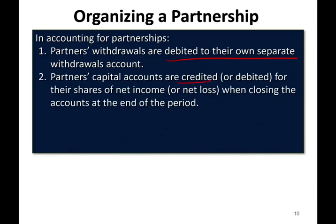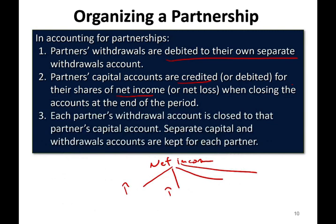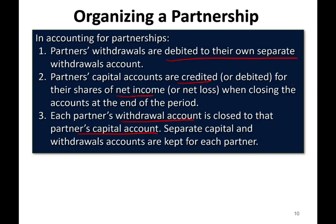Partners' capital accounts are credited or debited for their shares of net income or net loss when closing the accounts. Once the partnership generates net income, that income is allocated to each partner's capital account separately. If there's a net loss, it reduces their capital. Each partner's withdrawal account is closed to that partner's capital account — so Tony First's withdrawals close to Tony First's capital.